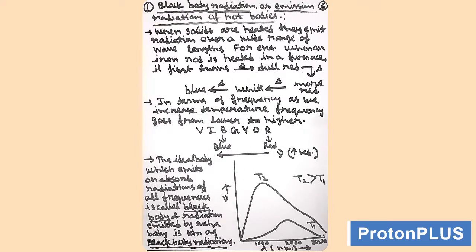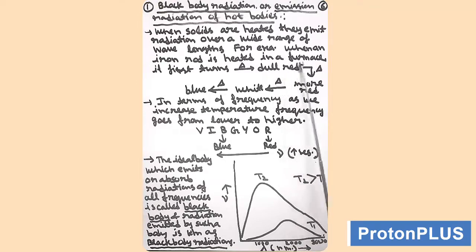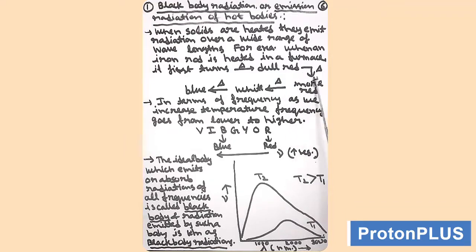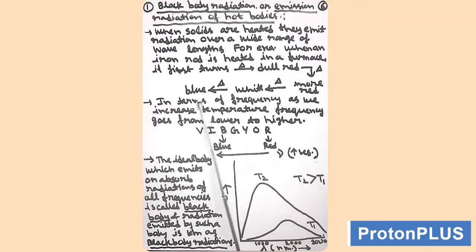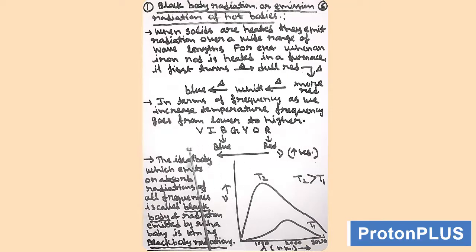Red is at lower frequency — radiations are of lower frequency in the red region. When we move from red to blue, frequency increases. So this frequency increase is a function of temperature. When we increase the temperature, the frequency of the radiation increases. As we increase temperature, frequency goes from lower to higher region — from red to blue, frequency increases.